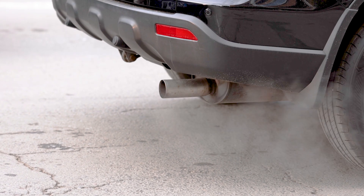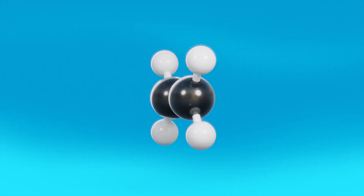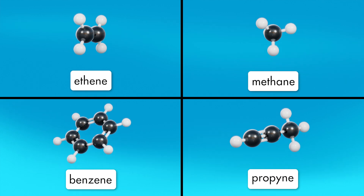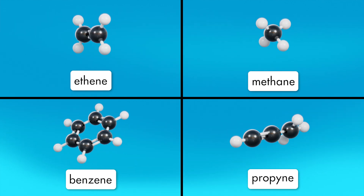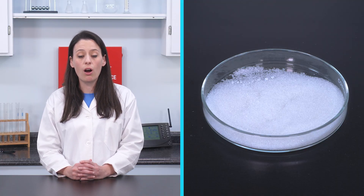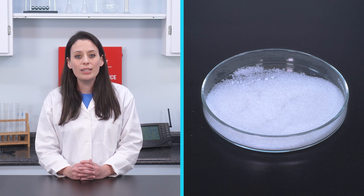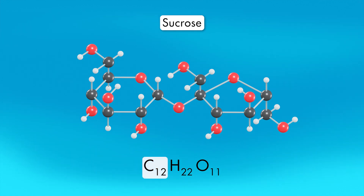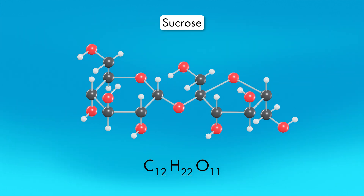Carbon easily combines with other elements to form compounds. It reacts with oxygen to form carbon dioxide and carbon monoxide, which are both products of gasoline combustion in automobiles. Organic compounds contain carbon atoms that are chemically bonded to hydrogen atoms. Millions of organic compounds have been discovered, and more are being produced each year. Sucrose is an organic compound formed of carbon, hydrogen, and oxygen. Sucrose is a white, crystalline, sweet-tasting substance that easily dissolves in water. A sucrose molecule consists of 12 carbon atoms, 22 hydrogen atoms, and 11 atoms of oxygen. Its chemical formula is C12H22O11.